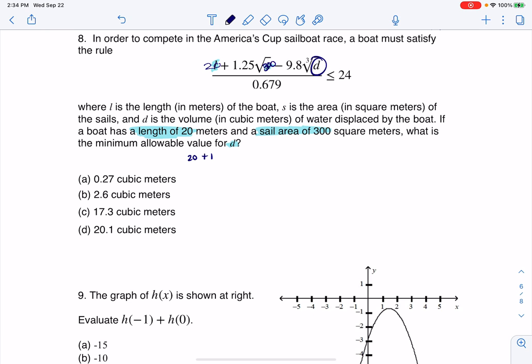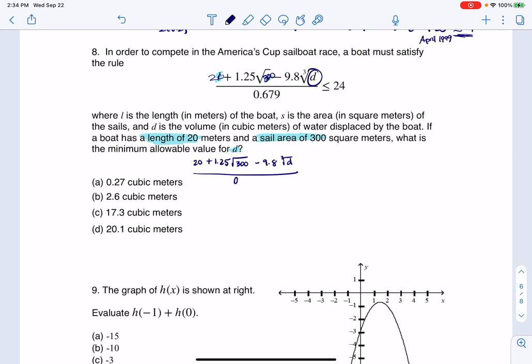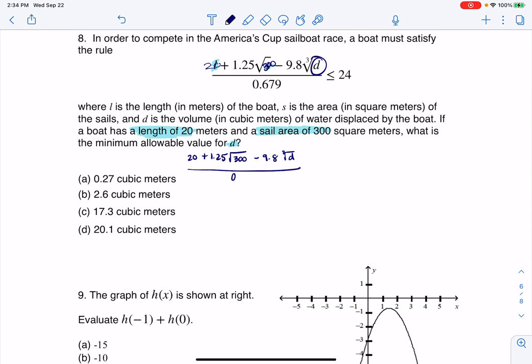So I'm going to have 20 plus 1.25 times the square root of 300 minus 9.8 times the cube root of D. And I'll put that over 0.679, and that's got to be less than or equal to 24.